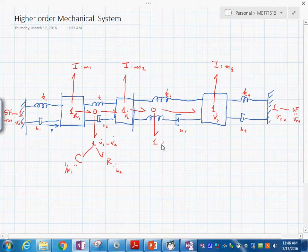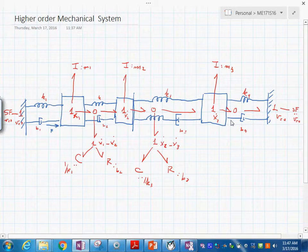With value 1 over k sub 3, and the R b sub 3. In between these two, we will have this again, one with the C and R element, with value 1 over k sub 4, and this with value b sub 4.